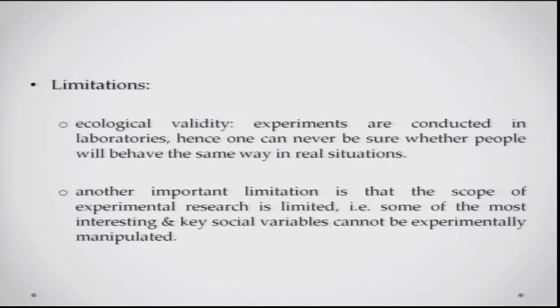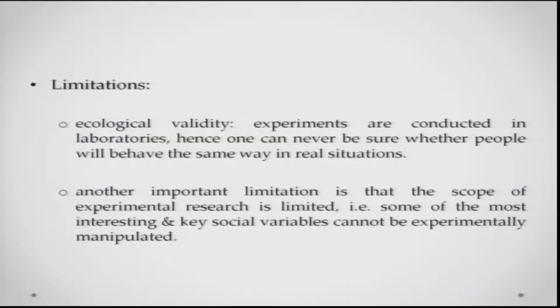There are also limitations to experimental research design. First is ecological validity — experiments are conducted under controlled laboratory settings, and in that sense they cannot be fully predictive of how the relationship between variables plays out in the outside world where there is not so much control. Another important limitation is that the scope of experimental research is rather limited — it is very difficult to manipulate all kinds of variables. Social variables such as the effects of religion or race are things you cannot experimentally vary or manipulate.